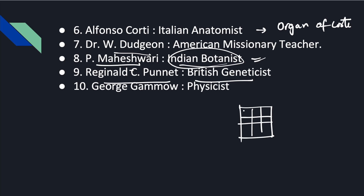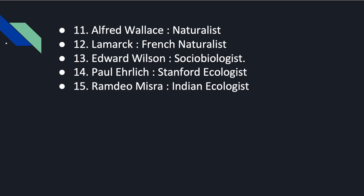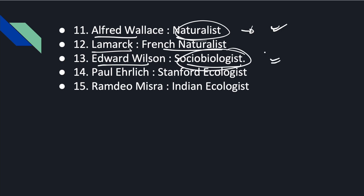Reginald Punnett was a British geneticist — in genetics we study the Punnett Square, where we put alleles on one side and write the combinations. That Punnett Square was given by Reginald C. Punnett. George Gamow is a physicist who worked on the Genetic Code. Alfred Wallace was a naturalist. Lamarck was also a French naturalist. Edward Wilson is a sociobiologist.